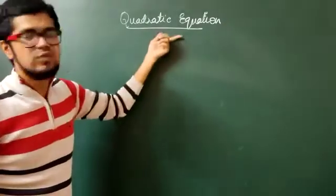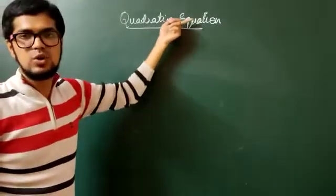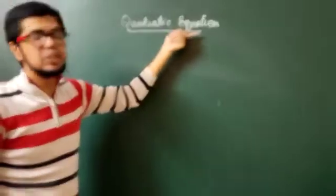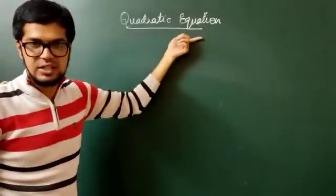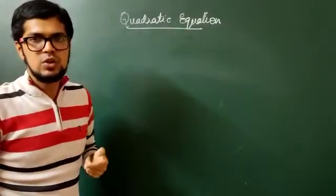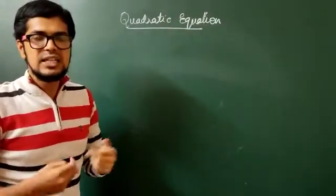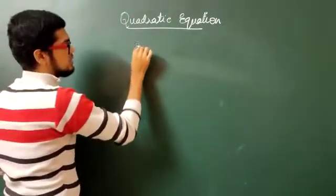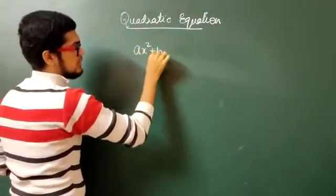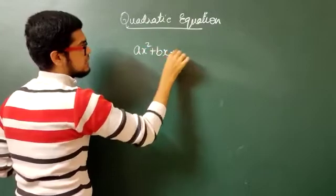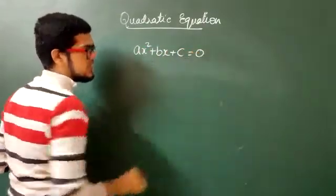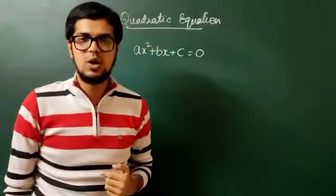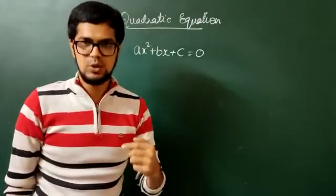So first let us go in deep to understand what is the meaning of Quadratic Equations. Any equation of the form AX squared plus BX plus C is equal to 0 is called a Quadratic Equation.